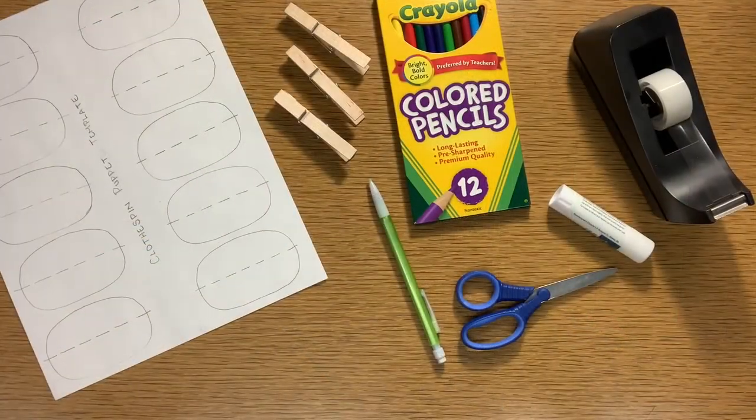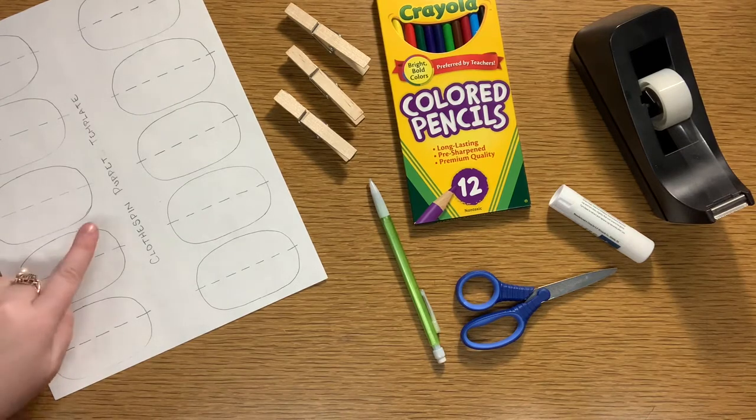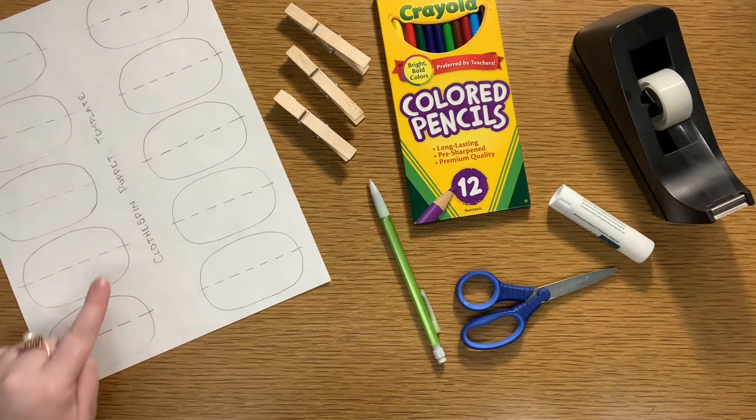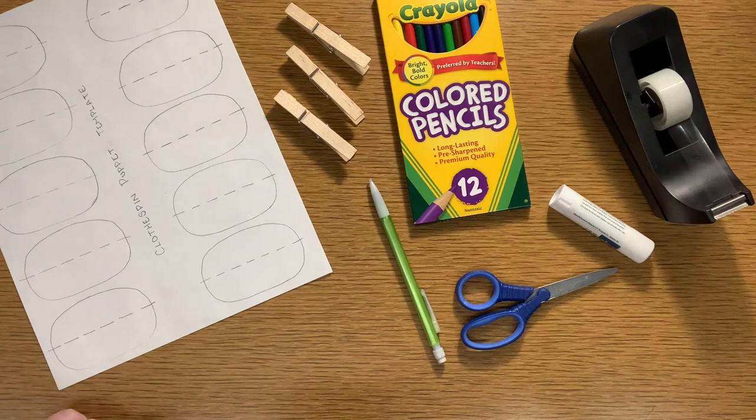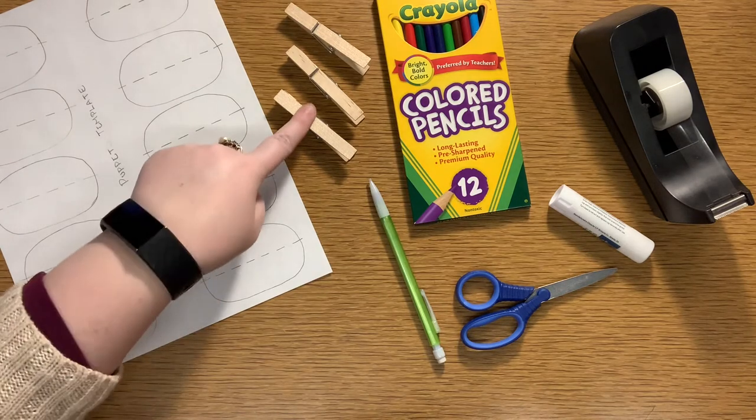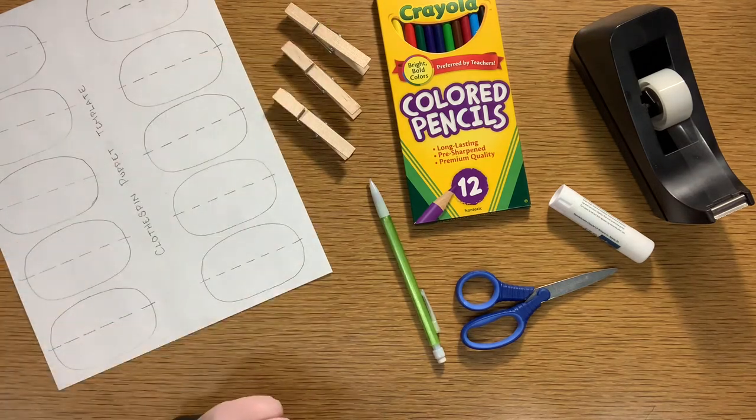So, for this style of puppet, you're going to need the following materials. You'll need your clothespin puppet template that looks like this. It's in your puppet kit in the folder. You're going to need at least one of your clothespins,